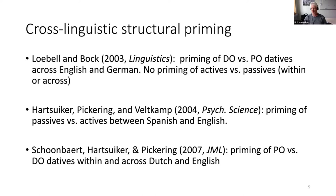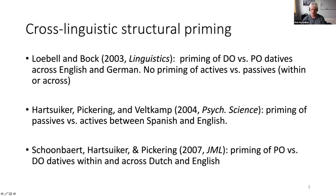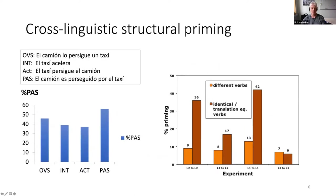Importantly for cross-linguistic effects: there is cross-linguistic structural priming. Together with colleagues, Levelt and Bock showed priming of datives across English and German — given an English double object, people were more likely to produce the German double object, and similarly for PO. Interestingly they found no priming of actives versus passives between English and German. In my own study I showed priming between Spanish and English passives and actives, and later priming of PO and DO datives within and across Dutch and English.